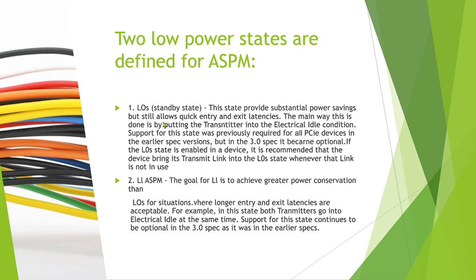The main way this is done is by putting the transmitter into electrical idle condition. Whenever any device is under the electrical idle condition, you can save power. In the L0s state, the transmitter needs to send the electrical idle signal to the opponent component. Why? Because the opponent component needs to know before sending any packet — if you send a packet without checking, the packet may be lost. That's why the component needs to be notified that the particular component is under electrical idle condition.